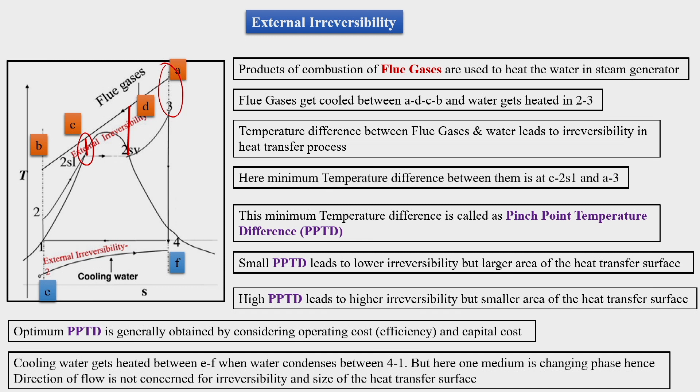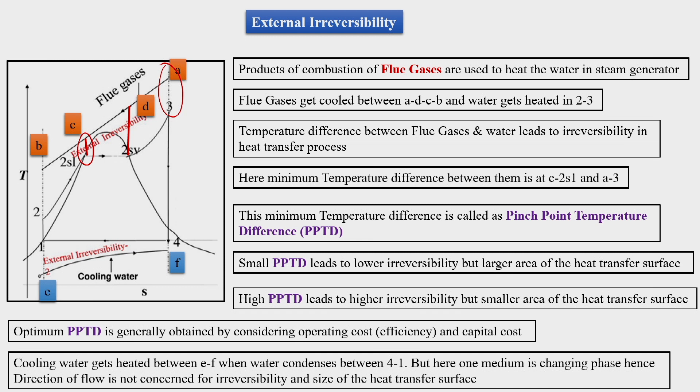Overall, there are external and internal irreversibilities to address. Internal irreversibilities are mainly due to friction and can be reduced by making passages smoother. External irreversibilities can be reduced by minimizing the temperature difference between flue gases and the steam passing through the steam generator.